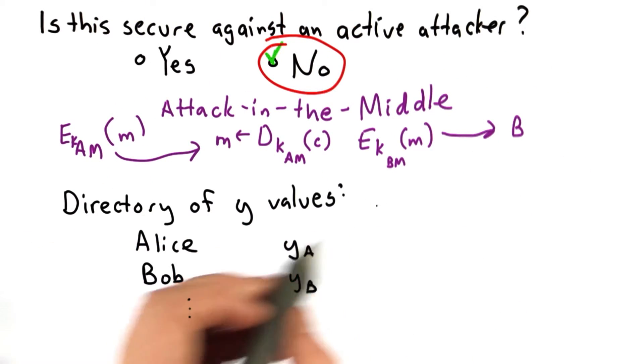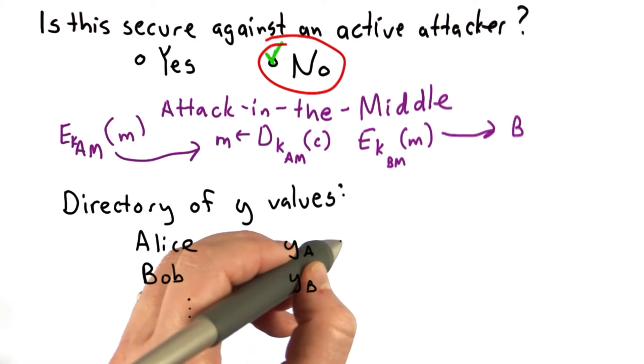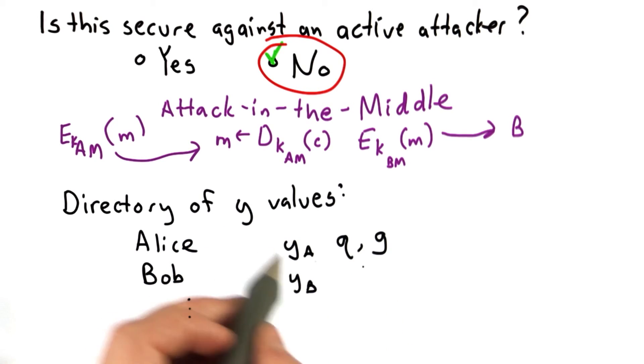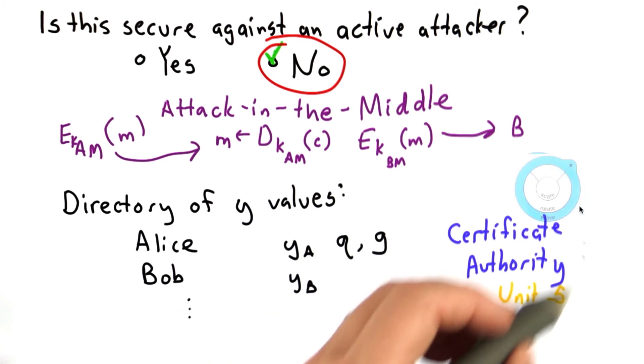It could also be useful in a case where there's some trusted directory that has the Y values, and Bob could look up Alice's YA value, know the Q and the G values, and then Bob would know that he's communicating with Alice if he trusts this directory.